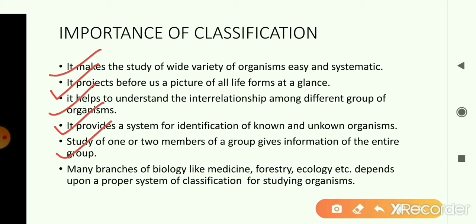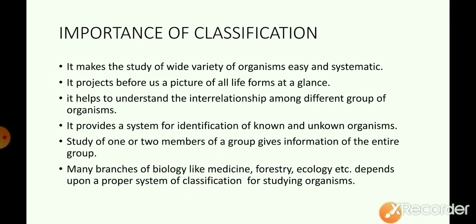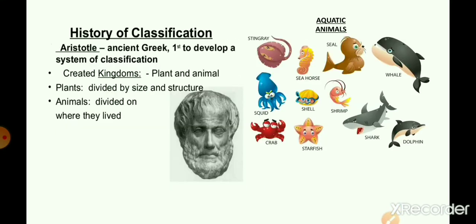For example, studying one or two mammals reveals that all mammals have mammary glands and a body covered with hair. Many branches of biology — like medicine, forestry, and ecology — depend upon a proper system of classification for studying organisms. This is why we need a proper system of classification, and many biologists have tried to classify the living world in different ways.